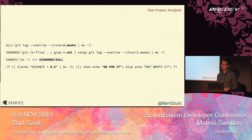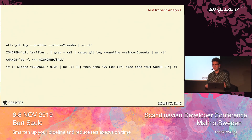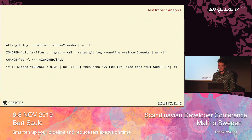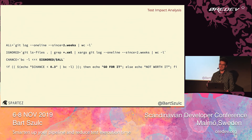Before you even start considering test impact analysis, you need to assess your codebase. If you use Git, take all the commits from the past few weeks and see how often XML files or other files without coverage information got changed. Compute how often that situation happens: if it affects more than 30% of commits, it may not be a good idea to go with test impact analysis because you likely won't see much reduction in test execution times.